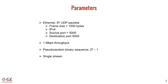The parameters for this test are as follows. We will send Ethernet frames which will contain IP and UDP data. We will conduct the test at 1 megabit per second and use a pseudo-random binary sequence as our bit pattern. We will only send one stream of traffic. Please keep in mind that all of these parameters are configurable.